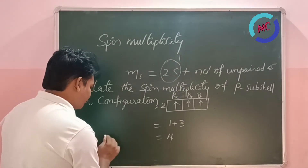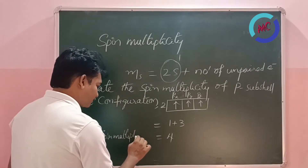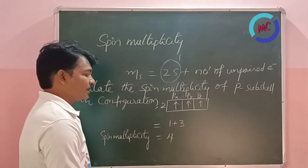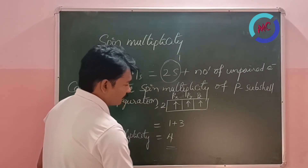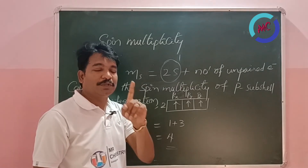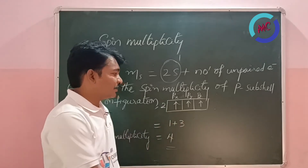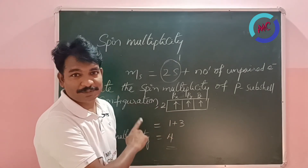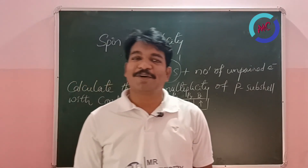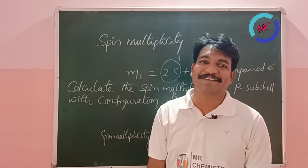The spin multiplicity of the given 2p³ orbital is 4. To summarize: to find spin multiplicity, just add 1 to the number of unpaired electrons. To find unpaired electrons, write the box method configuration following Hund's rule. Thank you all — follow our channel Mr. Chemistry to know all the tricks.